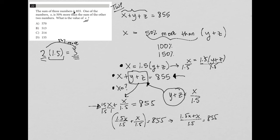Combining these, it becomes (1.5x plus x) over 1.5 equals 855. 1.5x plus x is 2.5x over 1.5 equals 855. Multiplying both sides by 1.5, the 1.5s cross out, giving 2.5x equals 855 times 1.5.